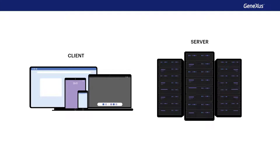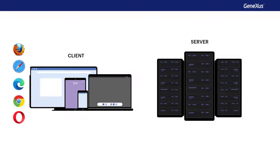In the case of web systems, the client is the internet browser, regardless if it's running on a desktop computer, a laptop, a tablet, or a smartphone. The server is where the web application is hosted, usually a large computer capable of handling simultaneous requests from thousands of customers.